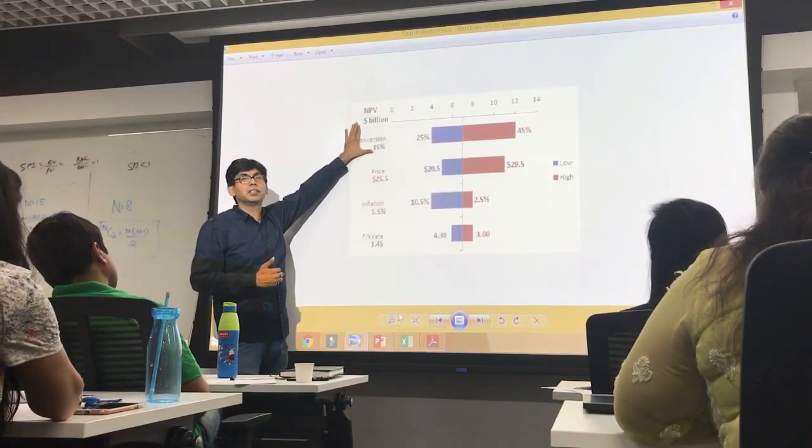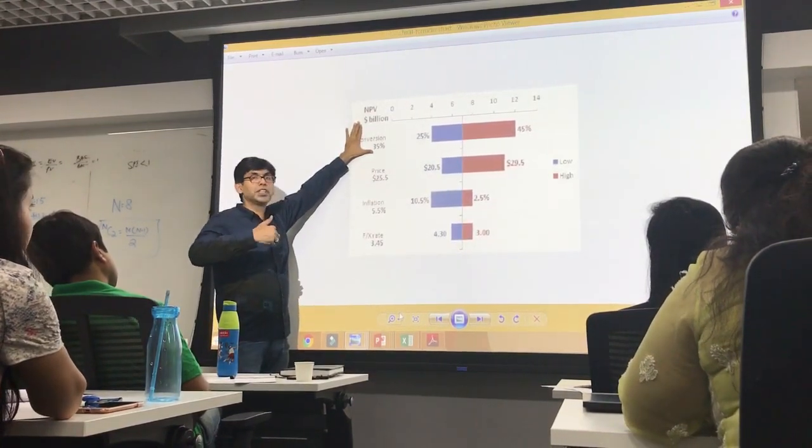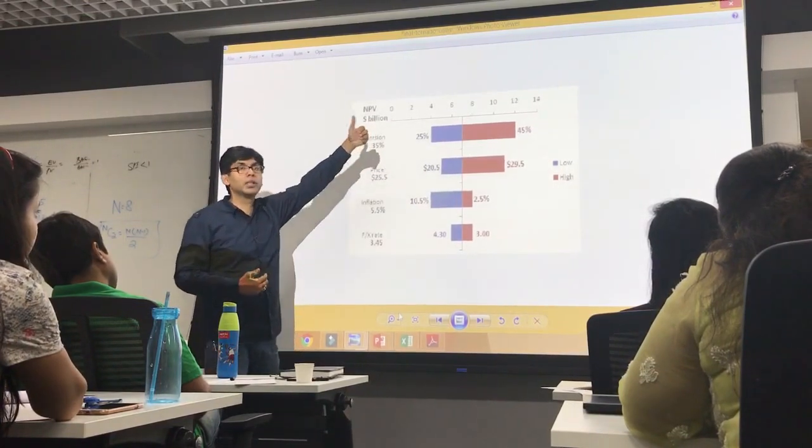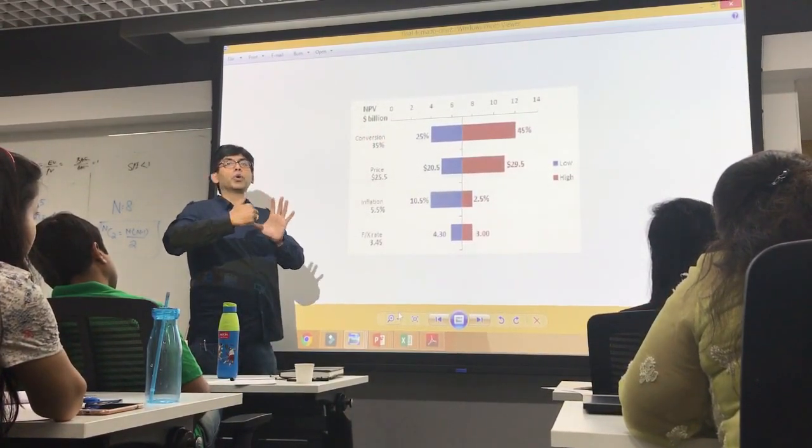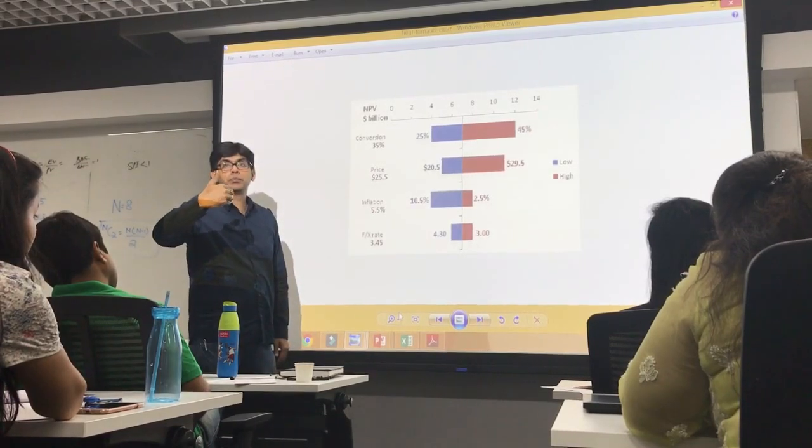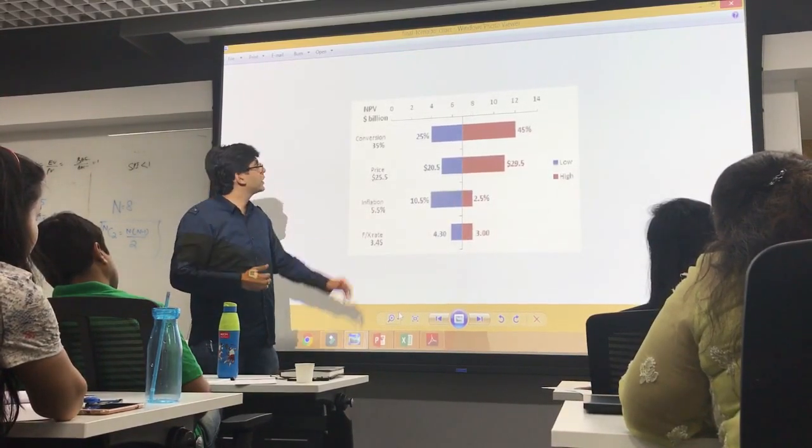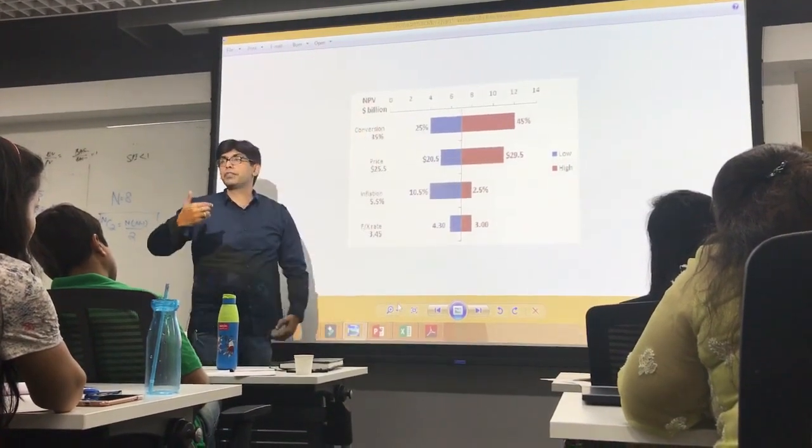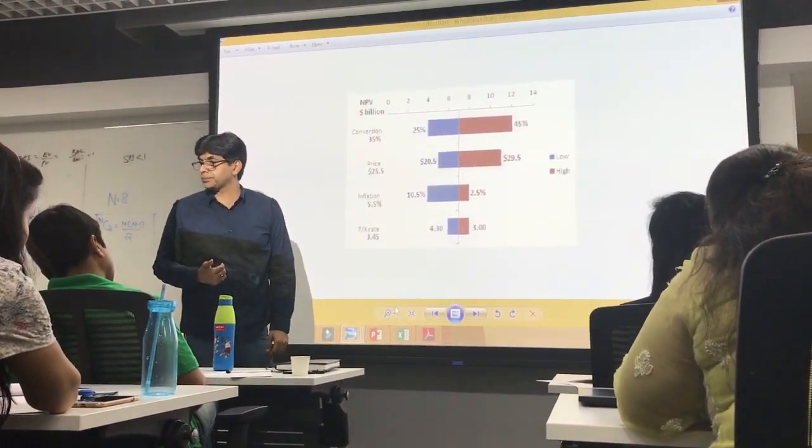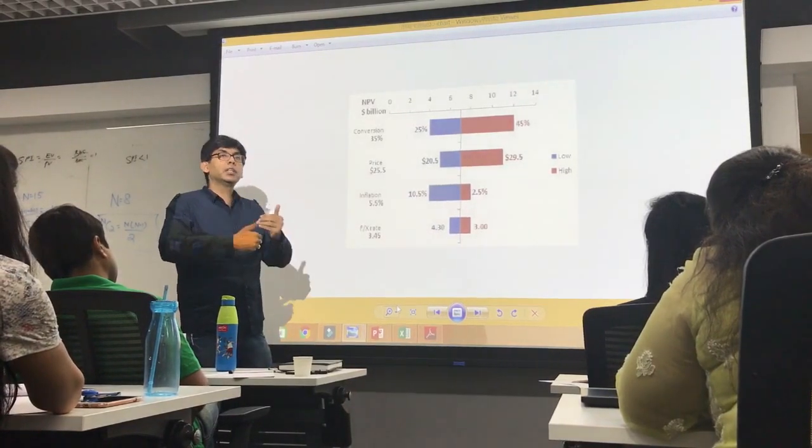If conversion is higher, I will make more money, more profit than the benchmark profit. If conversion is lower than the 35% value, then I will make less profits than the benchmark value. Now let's go to the next risk.